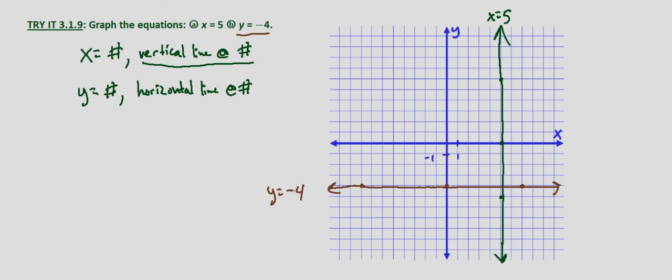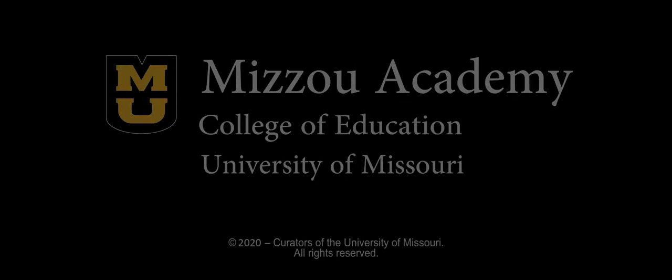So again, x equals a number is a vertical line at x equals that number. Y equals a number is a horizontal line at y equals that number. And it's really that simple to graph vertical and horizontal lines.